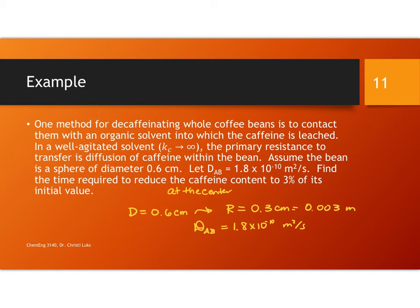And we want to find the time required to get the caffeine content to 3% of its initial value. Now, if you recall looking at those Heisler charts, they are in terms of concentration or temperature ratios. I'm going to assume that K equals to 1. They didn't tell me any differently, so I think that's about as well as we'll be able to do.